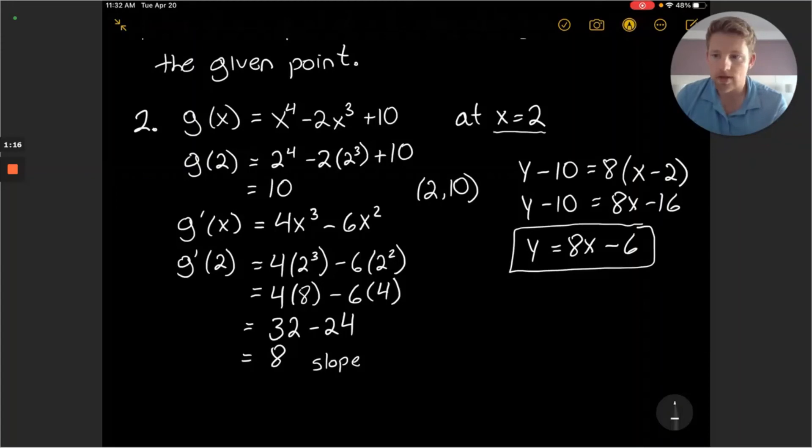So thanks for watching this video. Hope this is helpful with finding the equation of a tangent line at a given point. We want to find its functional value at that point and then find its derivative at that point which gives us our tangent line slope. When we put those two things together we're able to write that equation of the tangent line either as a point slope form or we could write it with slope intercept form. So thanks for watching and I'll see you in the next video.